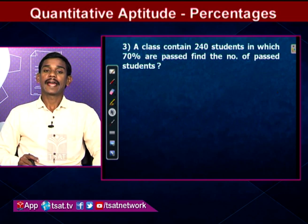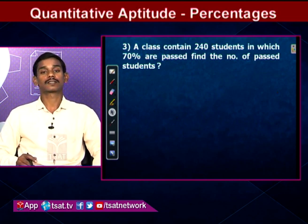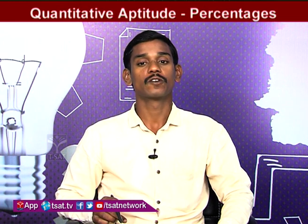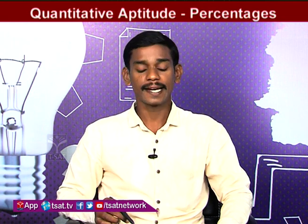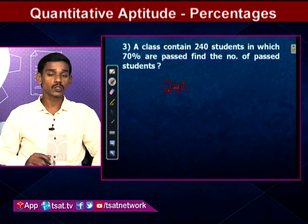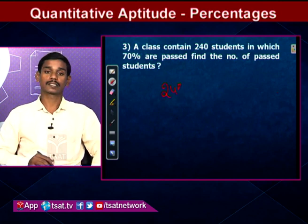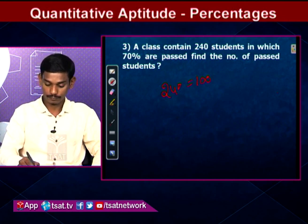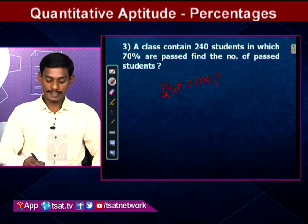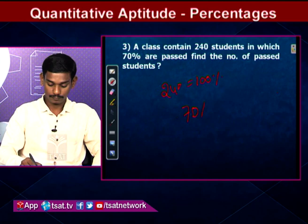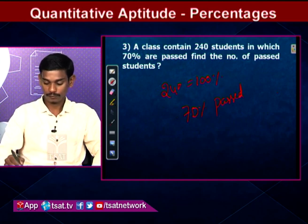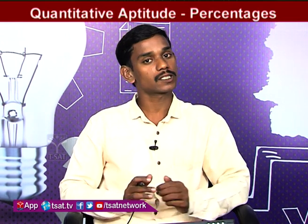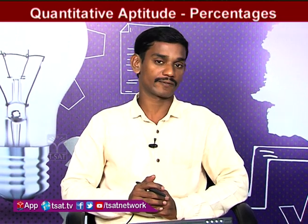A class contains 240 students in which 70% passed. Find the number of students who passed. The 240 students equal 100%. 70% passed, meaning 30% failed. We want to find the value of 70%.